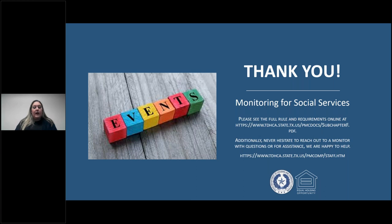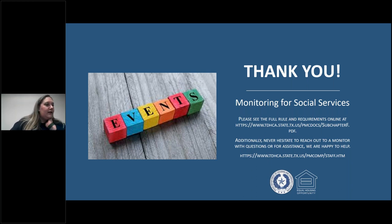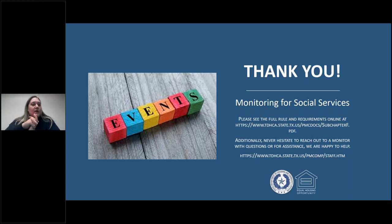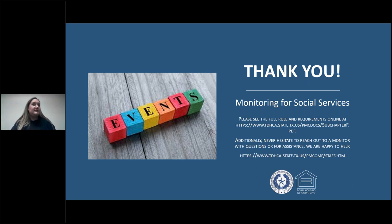Now we can go over some questions. The first question: 'We have services in our land use restriction agreement at one development and have another development with social services across the street. If someone can walk across the street to the services, do we have to provide transportation? Can we count those services if they walk?' Yes, you need to have transportation because you cannot require that they walk. These are two separate properties and you don't want to ask your residents to walk to another property — you need a transportation option.